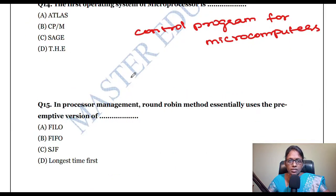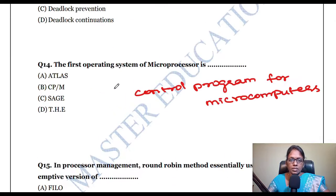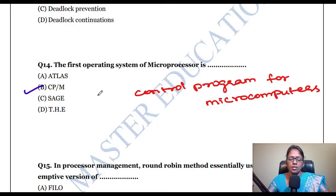The first operating system of a microprocessor is CP/M — Control Program for Microcomputers. This is the first OS of a microprocessor.